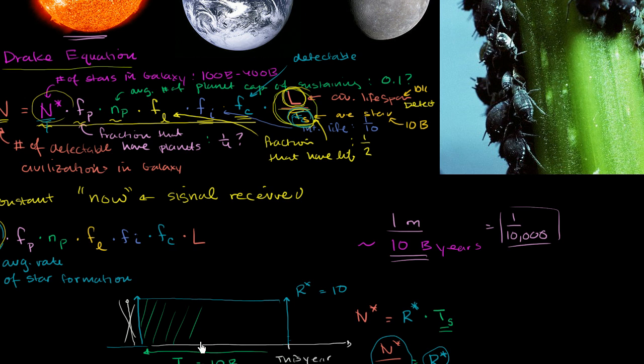I've talked a bunch about the Drake equation, or our own version of the Drake equation, that starts with the number of stars in the galaxy. But I haven't given it a shot yet. I haven't tried my own attempt at thinking about how many detectable civilizations there are. So let's actually do that here.